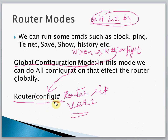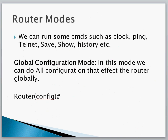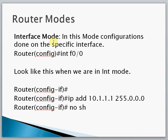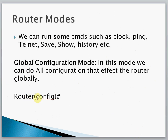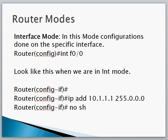We will see some examples in Global Configuration Mode. Next is Interface Mode. If we want to assign an IP address to the router, we need to first go to Interface Mode. In this mode we can configure IP addresses for a specific interface, assign access lists to a particular port, or configure NAT (Network Address Translation).